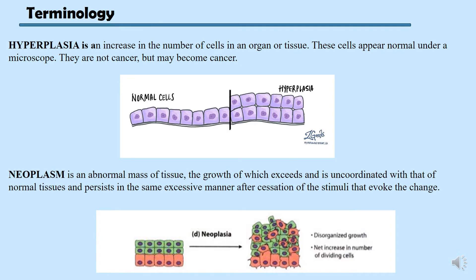Let's look at the two main terminologies we will be discussing in this topic. The first terminology is hyperplasia. Hyperplasia is an increase in the number of cells in an organ or tissue. These cells appear normal under a microscope — they are not cancer but may become cancer. This infographic from Google Images clearly shows what normal cells look like and how hyperplasia appears.